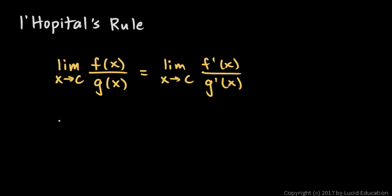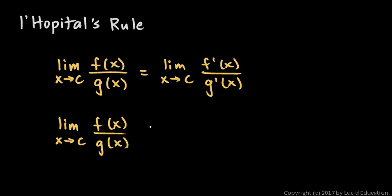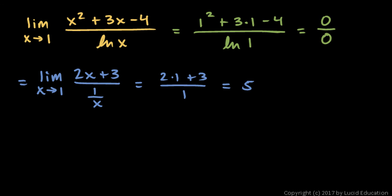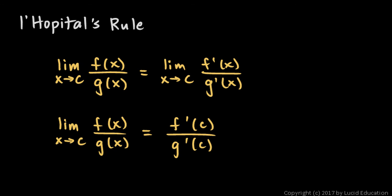In practice, L'Hôpital's rule is often used a little differently. The limit as x approaches c of f(x) over g(x), when indeterminate, can often be evaluated as f′(c) divided by g′(c). You can see that's essentially what we did in this problem — we took the derivative of the numerator, put in our x value, and divided by the derivative of the denominator with our x value substituted in. This is the complete statement of L'Hôpital's rule, sometimes referred to as the stronger form.